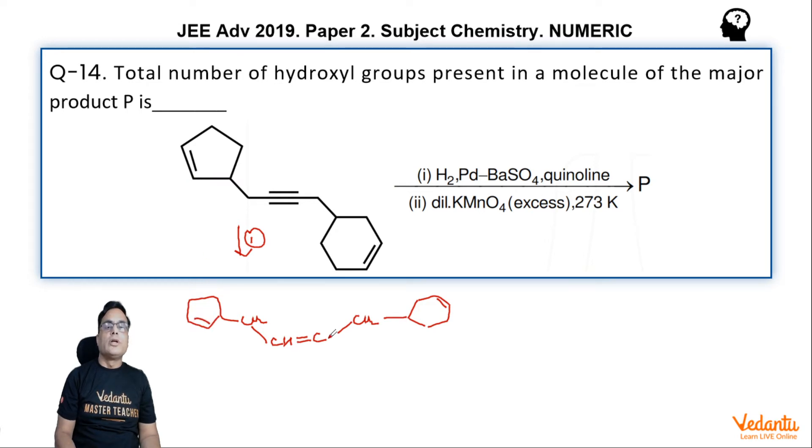Double bonds will not be affected by the Lindlar catalyst. But if you treat it with dilute KMnO4 in cold condition and that too in excess, then all the double bond carbons will attain OH groups.